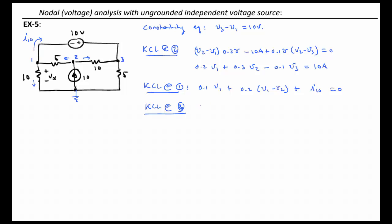The current going down through the 5 ohms is going to be 0.2 times V3. The current to the left through the 10 ohm is 0.1 times V3 minus V2. And then we have not I10 leaving, but I10 entering, so we have minus I10 equal to 0.